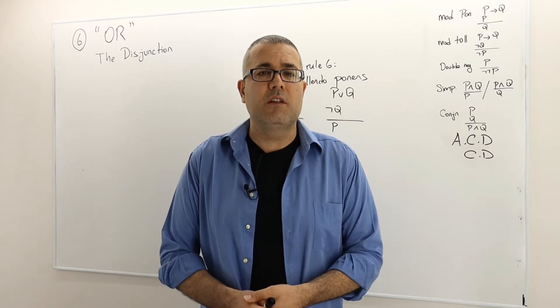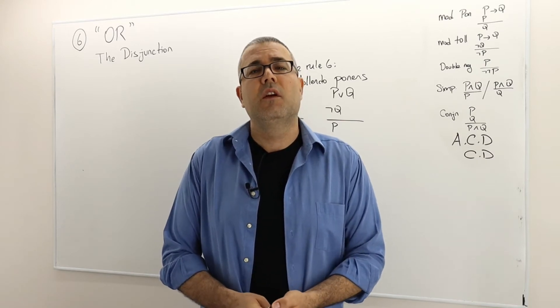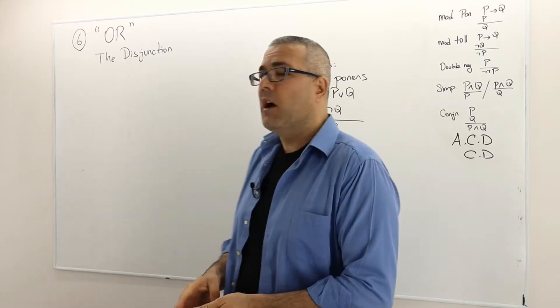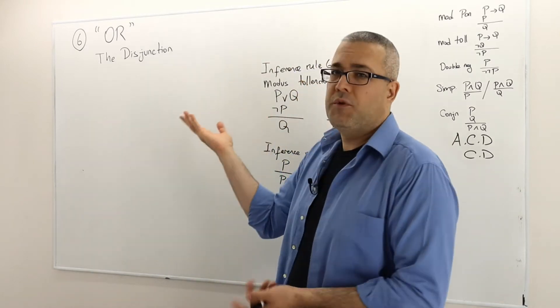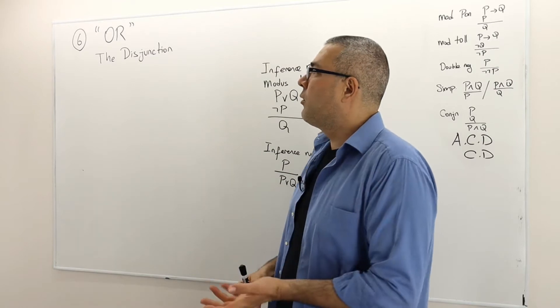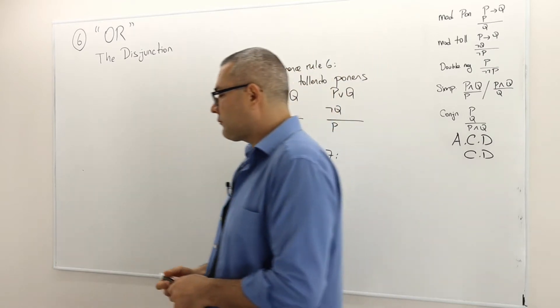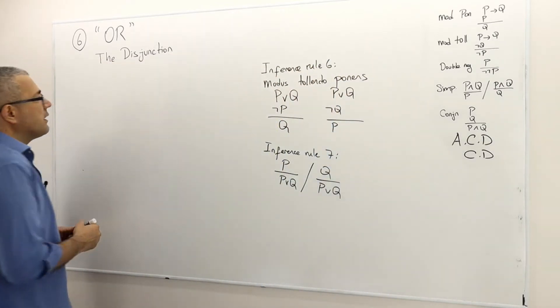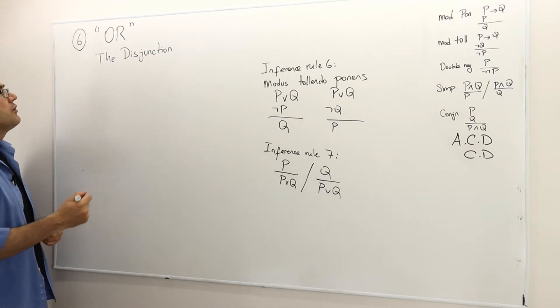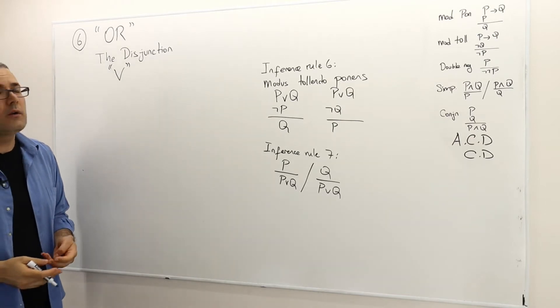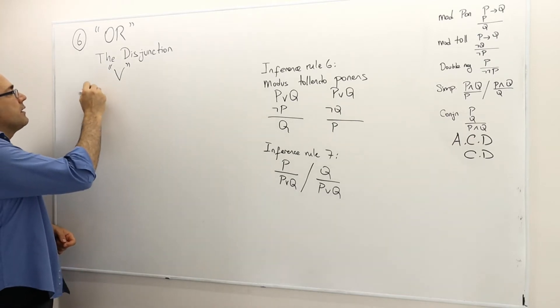So we need the new terminology which is OR, we call it disjunction. The symbol that we use for disjunction is this term and it reads as OR.